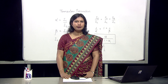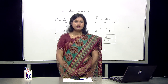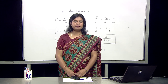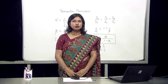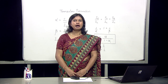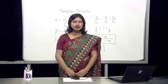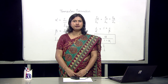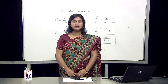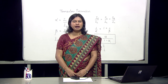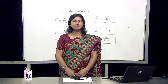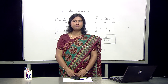Let's now recap today's class. We have learnt about transistors, which are bipolar junction devices. We discussed two different types: an NPN transistor and a PNP transistor. We also discussed the working principle of a transistor and the transistor parameters alpha and beta, and the mutual relation between alpha and beta.